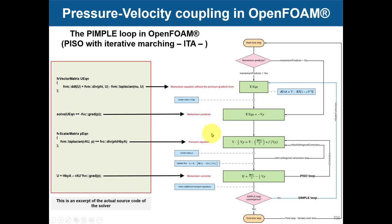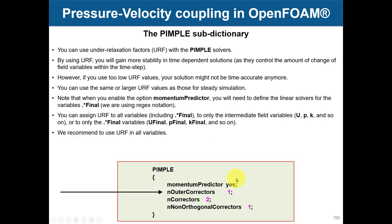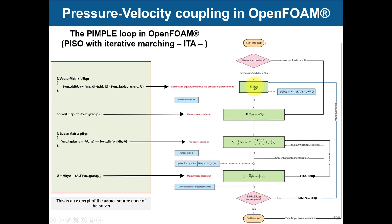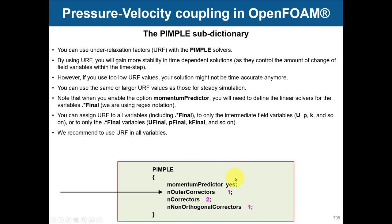When you increase the outer correctors, you repeat the entire PISO loop within your time step — you haven't advanced to the next time step yet. This outer loop recomputes everything, giving better approximations. In the non-iterative PISO, you get one approximation and advance; in the iterative PIMPLE, you recompute, put the result back, and recompute again — giving much better approximations of all gradients, fluxes, and so on, but at higher computational cost.